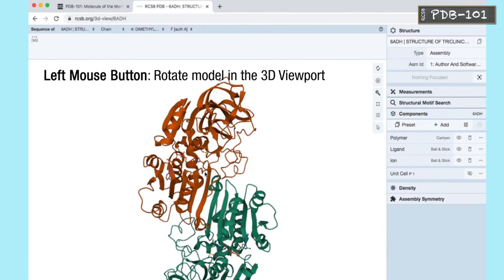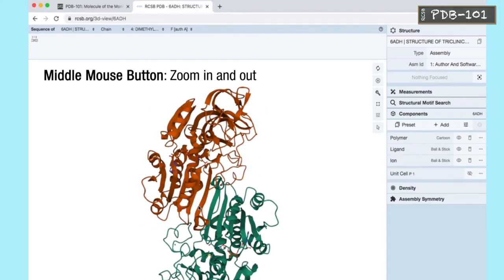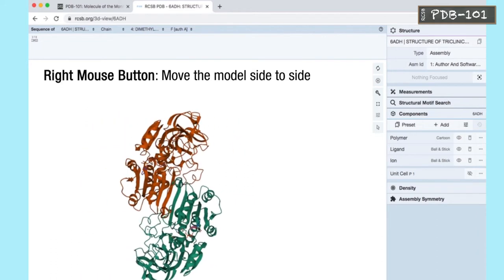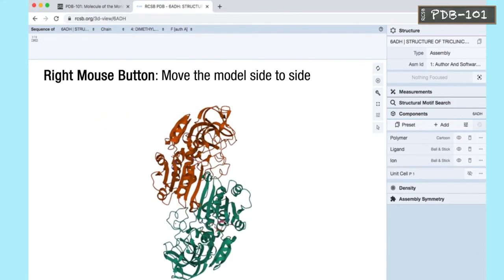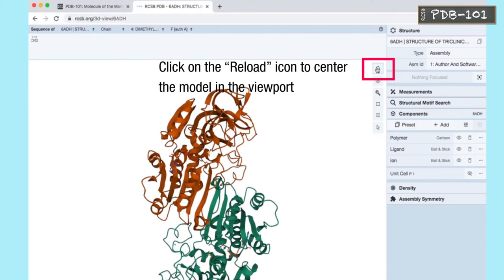Use left mouse button to rotate model in the 3D viewport. Use the middle mouse button to zoom in and out. Use right mouse button to move the model side to side. Click on the reload icon to center the model in the viewport.